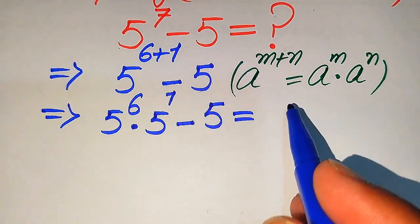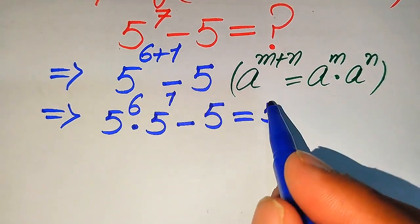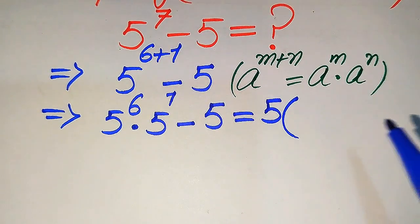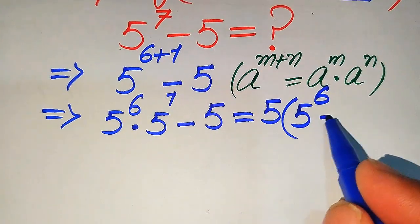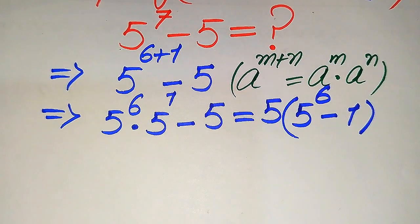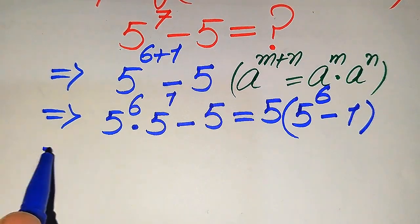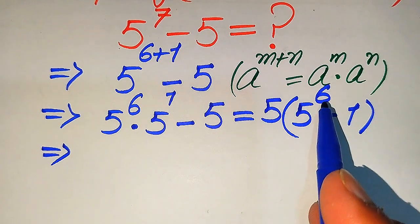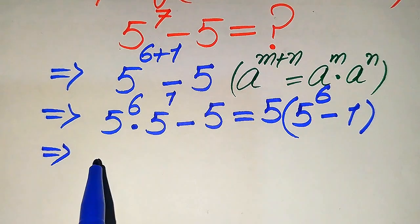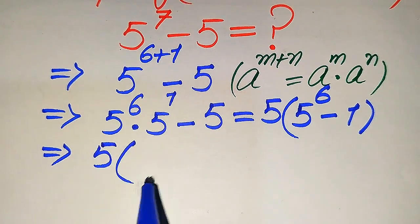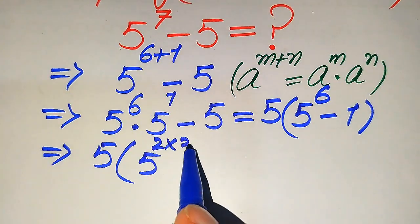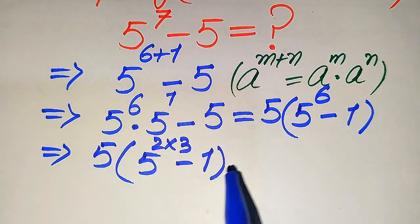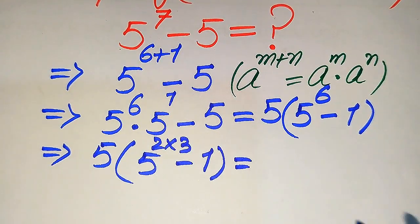Now both terms involve 5, so we take 5 as a common factor. We get 5 times the quantity 5 to the power of 6 minus 1. We then break the exponent 6 and rewrite it as 5 to the power of 2 multiplied by 3, minus 1.